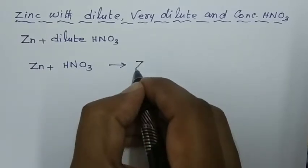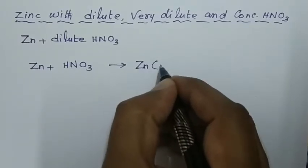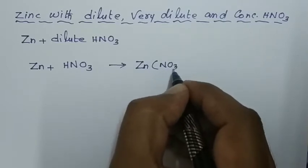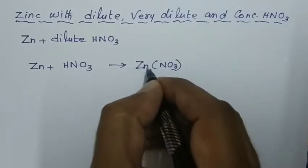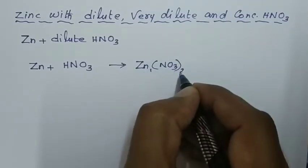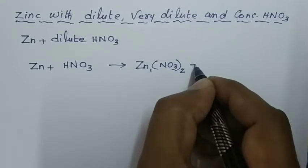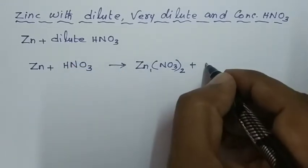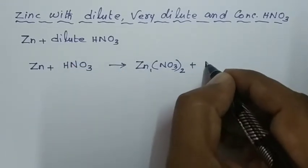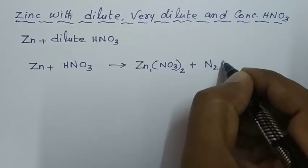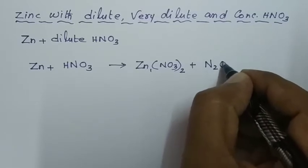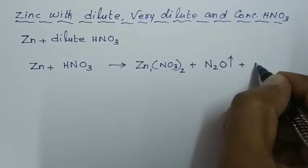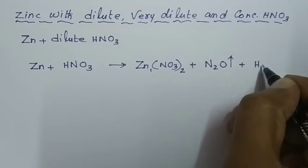Zinc forms zinc nitrate — nitrate has valency 1 and zinc has valency 2. With dilute nitric acid, it liberates nitrous oxide (laughing gas) and water molecule H2O.